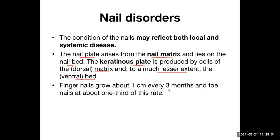Fingernails grow about one centimeter every three months and toenails at about one third of this rate, so fingernails grow much faster than toenails. There is individual variation — some people can grow fingernails quite faster than others — but this is an average.